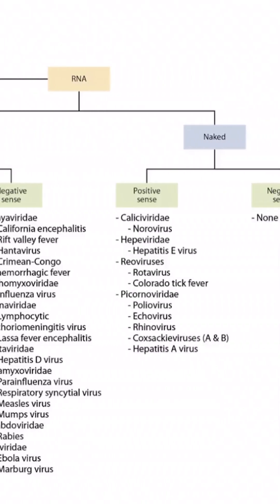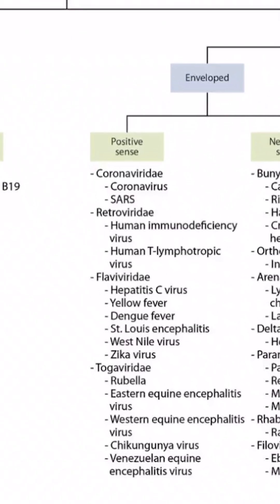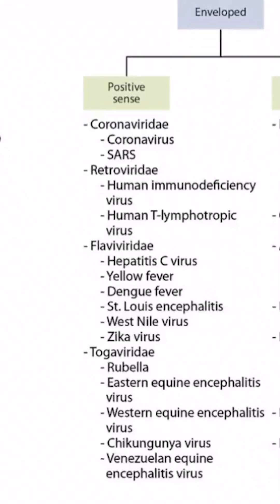This is our virus overview figure, and in this video we'll be discussing most of the toga viruses, including eastern, western, and Venezuelan equine encephalitis viruses and chikungunya virus.